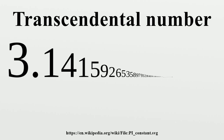Additionally proven transcendental: γ (the Euler-Mascheroni constant in certain forms), 0.6434105... (Cahen's constant), 0.123456789101112131415... (the Champernowne constant), Ω (Chaitin's constant), the Fredholm number, and more generally any number of that form with 0 < β < 1 and β algebraic. Also the Liouville constant.